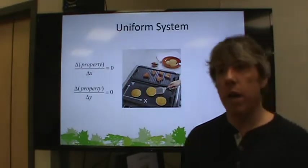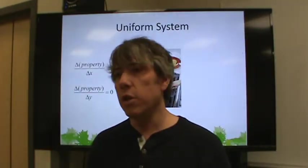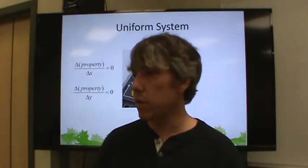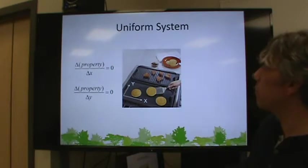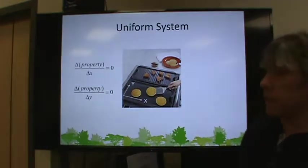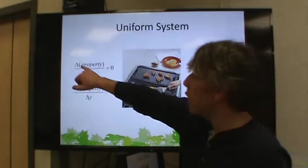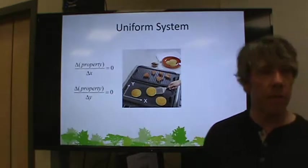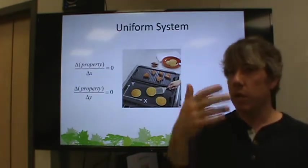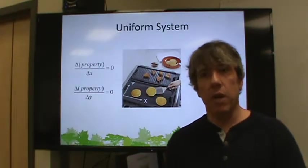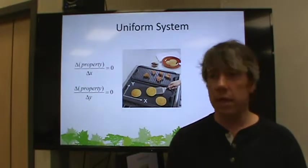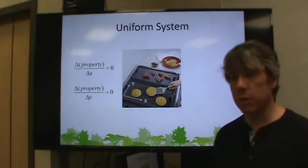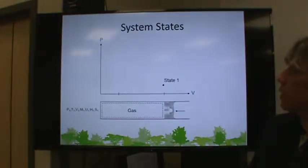A uniform system is a system where no matter what point you look at within the system, you find the same properties. Not just the same temperature, but the same pressure, the same energy, all these different things. So I've told you all of that so that hopefully you remember uniform systems. And now you know how to make pancakes too.